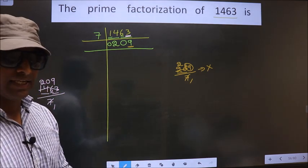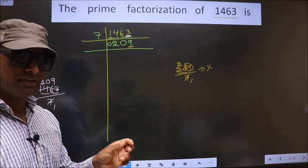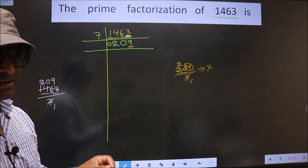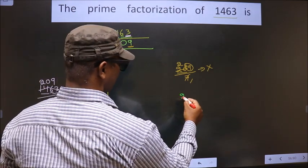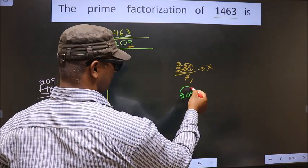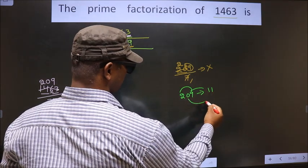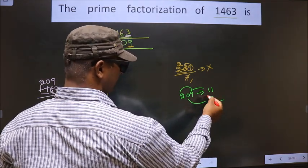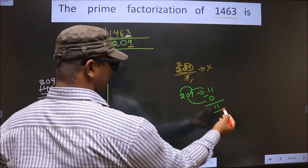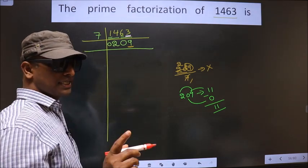The next prime number is 11. To check divisibility by 11, we take the difference of the sum of alternate numbers. Here we have 209 — add alternate numbers: 2 plus 9, we get 11. One number is left out, that is 0. Now take the difference: 11 minus 0 is 11. Is 11 divisible by 11? Yes. So, this number is divisible by 11.